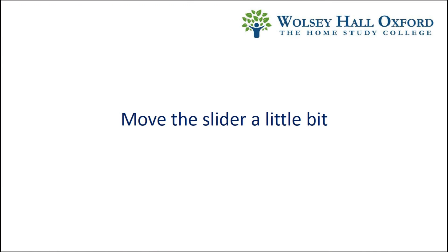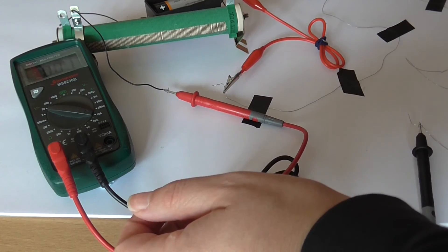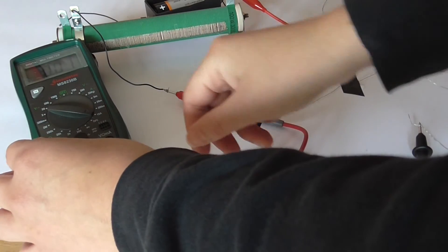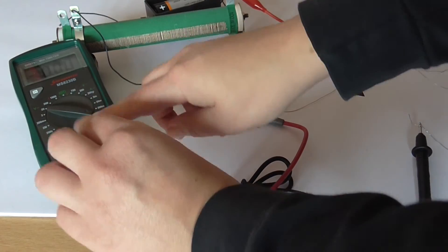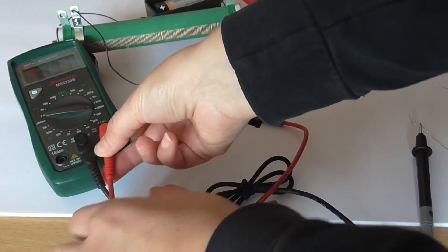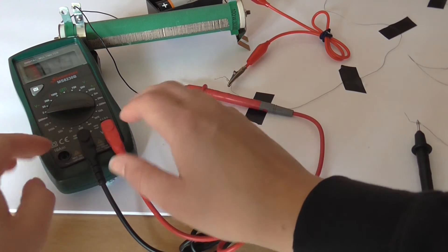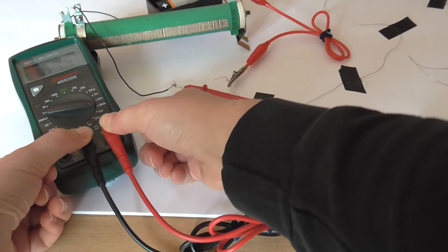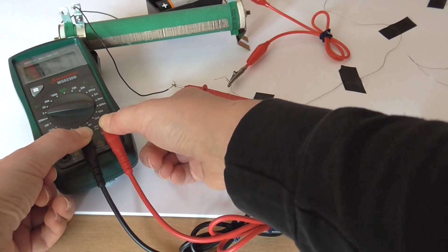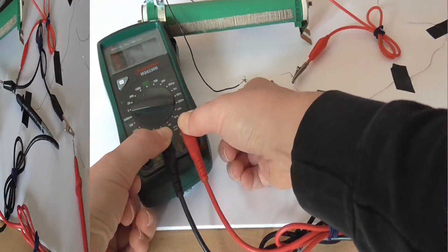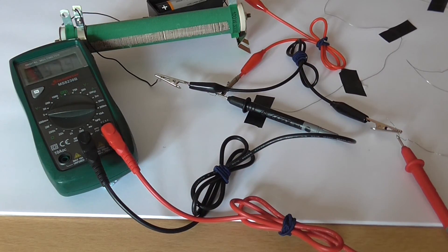If we move the slider down a little bit, we get a current of less than 200mA, so we can use the 200mA range. This involves swapping over the leads. The value there is 67.7mA with a corresponding voltmeter reading of 0.374V.